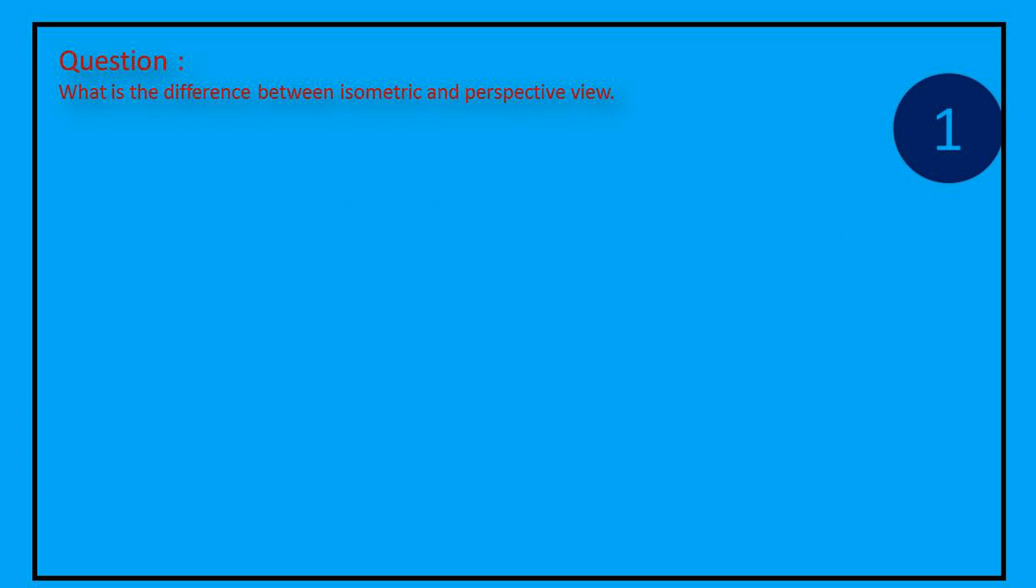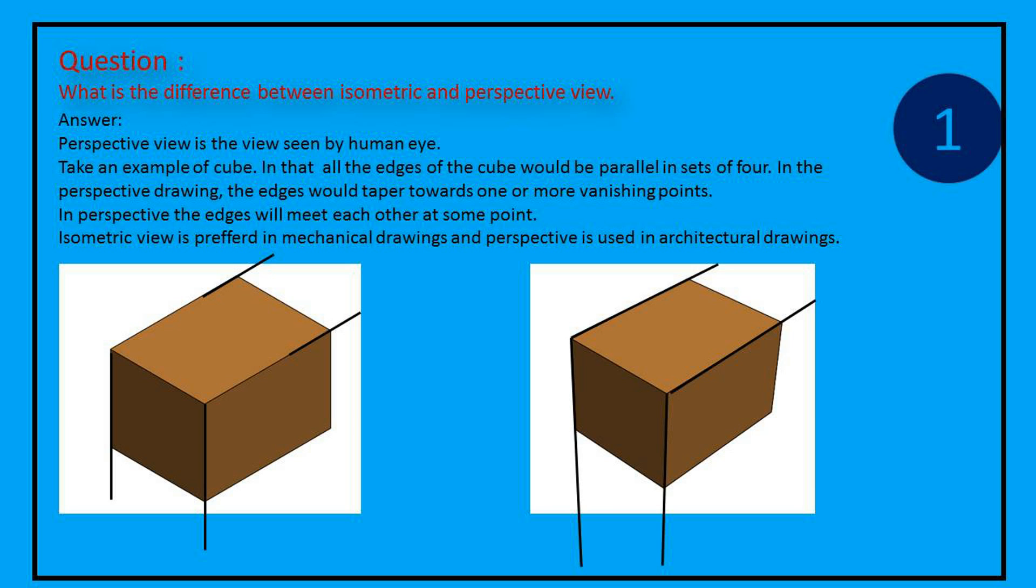Question: What is the difference between isometric and perspective view? Answer: Perspective view is the view seen by human eye. Take an example of cube. In that all the edges of the cube would be parallel in sets of four.